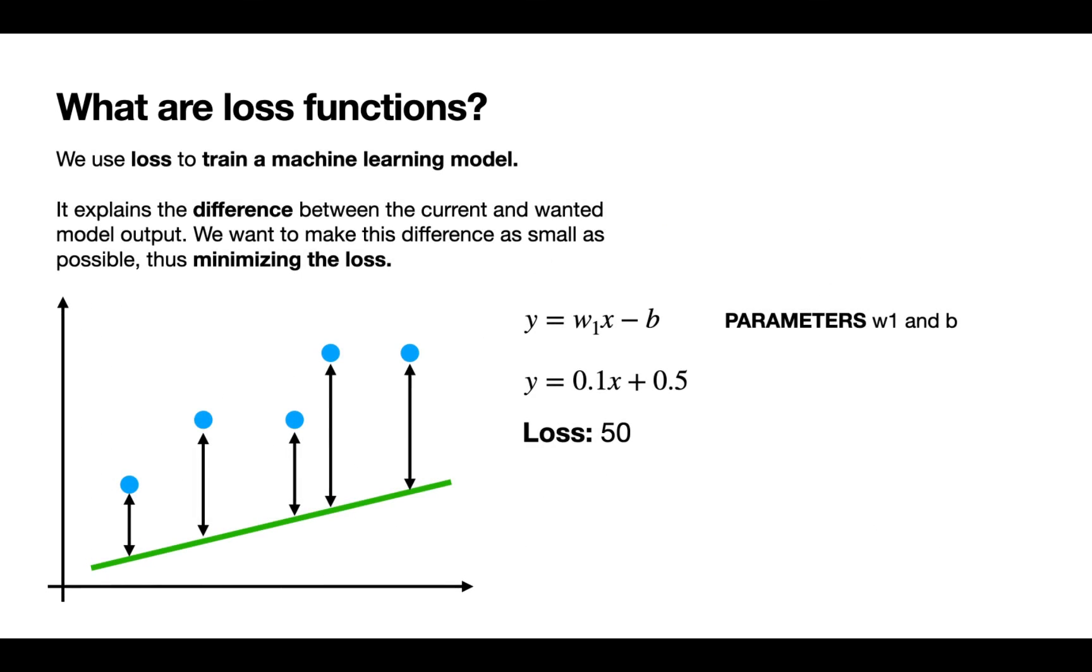For example, we have the data points in blue here. Let's say we want to fit a line to these blue points. This line is a function with two learnable parameters, mx + b or w1x - b here. What we want to do is minimize the loss.